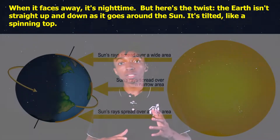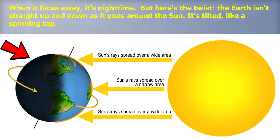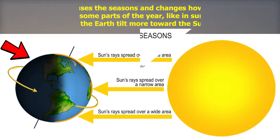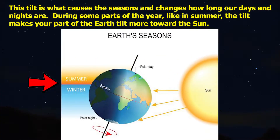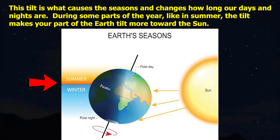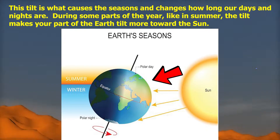But here's the twist. The earth doesn't stay straight up and down as it goes around the sun. It's tilted, like a spinning top. This tilt is what causes the seasons and changes how long our days and nights are.